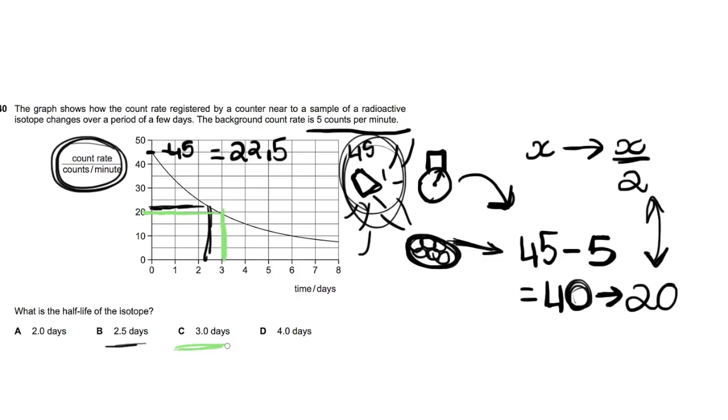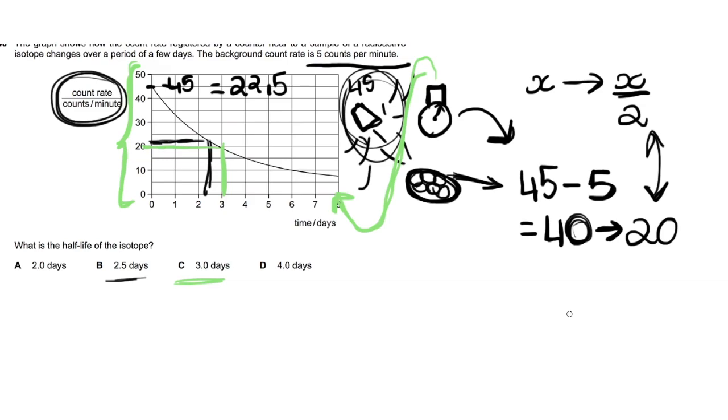But again you would be wrong, because this graph which is plotted is the contaminated graph. It's the raw reading that the counter or the detector is plotting, because there's still background radiation all throughout these readings. So this is a very important step right here. What you have to do is you have to add the background rate back to what the predicted half-life would be, what the actual half-life would be.